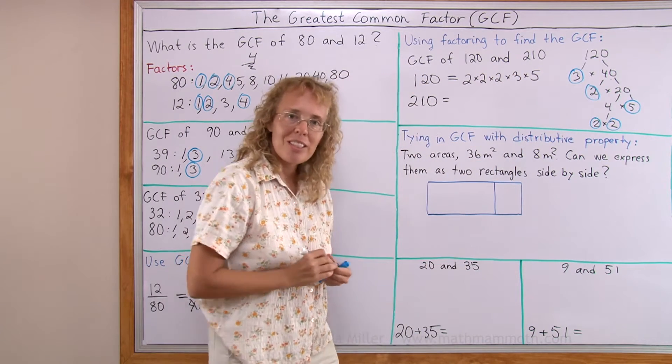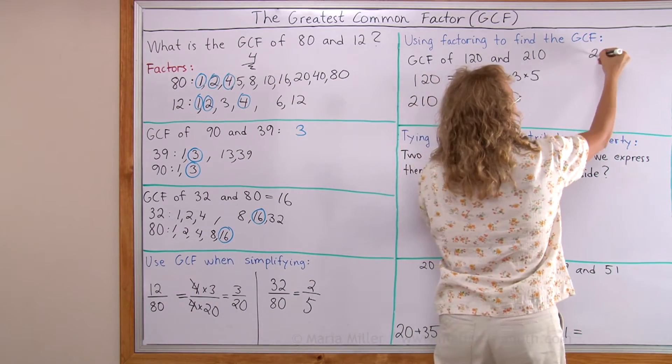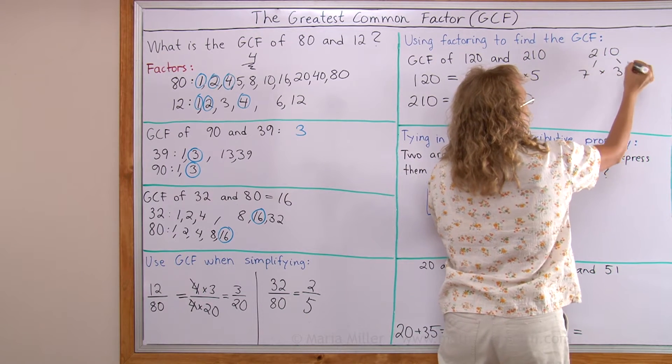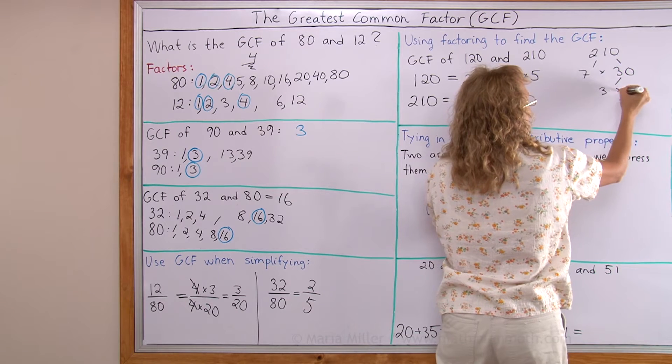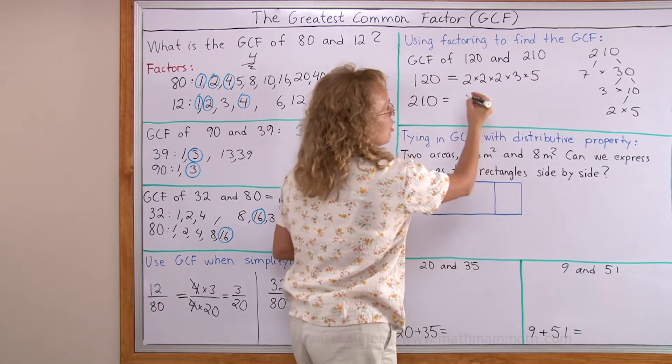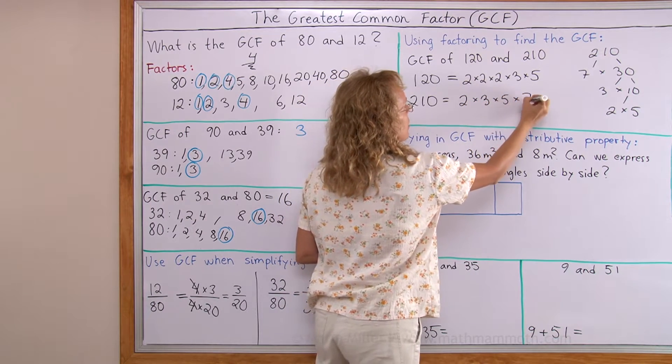And now we will do the same for 210. That would be 7 times 30 and 30 is 3 times 10 and 10 is 2 times 5. So now I get 2 times 3 times 5 times 7.